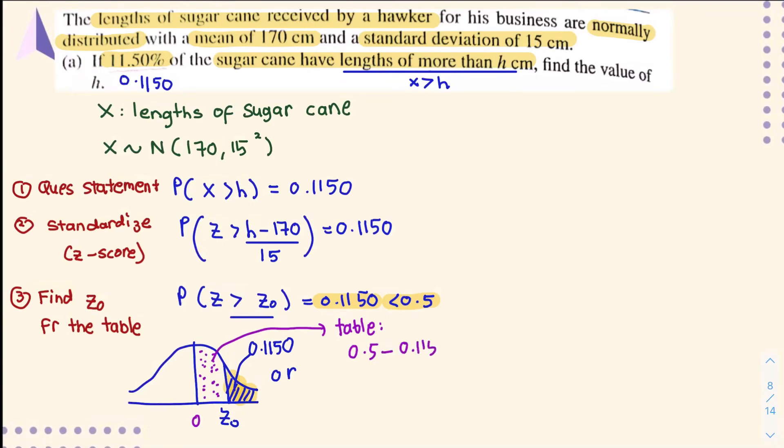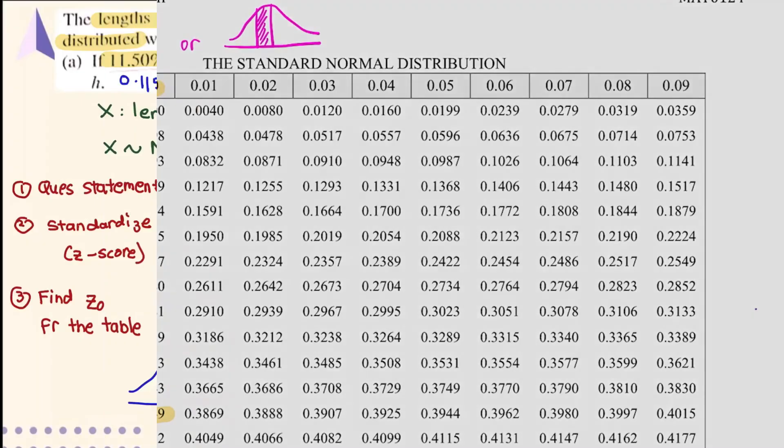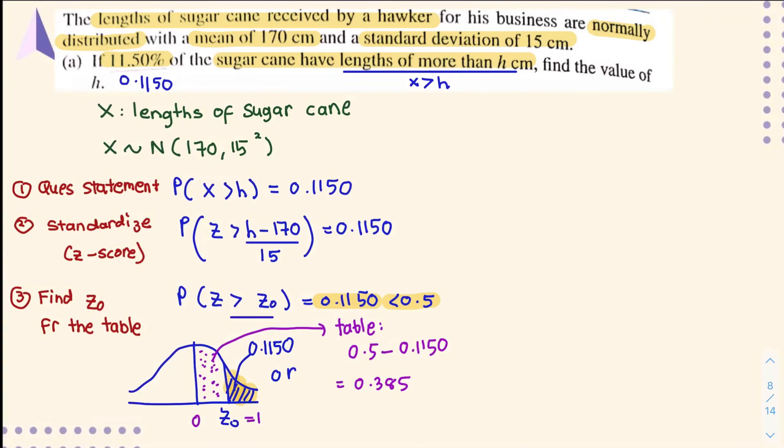Now look at the table and find the closest probability to 0.3850. The closest value is 0.3849, which is close to 0.385, so your z value is 1.20.